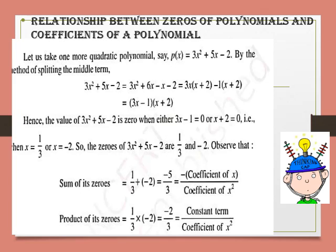Here is one more example for you: 3x square plus 5x minus 2. Can you tell me what is a? Yes, a is equal to 3. What is b? Yes, b is equal to 5. And what is c? c is equal to minus 2. We have to take the sign because it is a negative number.